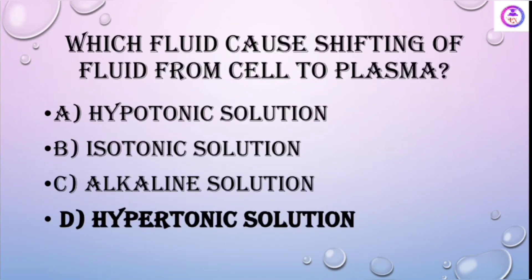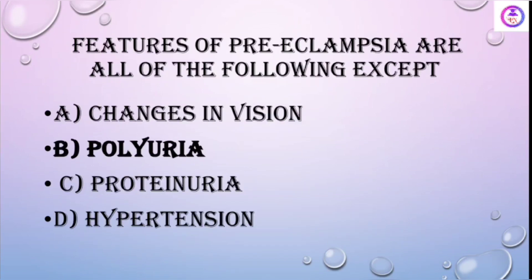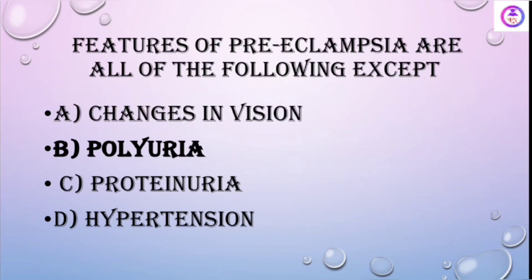Which fluid causes shifting of fluid from cell to plasma? Hypertonic saline causes shifting of fluid from the cell to the plasma, moving from higher concentration to lower concentration. Features of preeclampsia — all of the following except: the answer is polyuria.